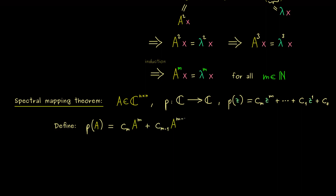It's important that all these operations are well-defined matrix operations. The only thing to adjust is the constant term: we can't add a complex number to a square matrix, so we need the identity matrix included — c_0 times the n×n identity matrix. What we get out is again a square matrix of size n×n.